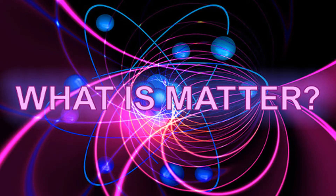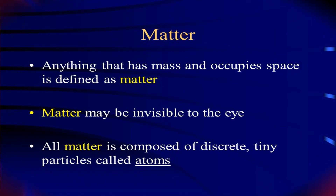We have learned what is matter. Matter is anything that has mass and occupies space. All these things, and even gas like air which we feel, is also matter. Matter may be invisible to our eyes but still it exists, like air. All matter is composed of discrete tiny particles called atoms.